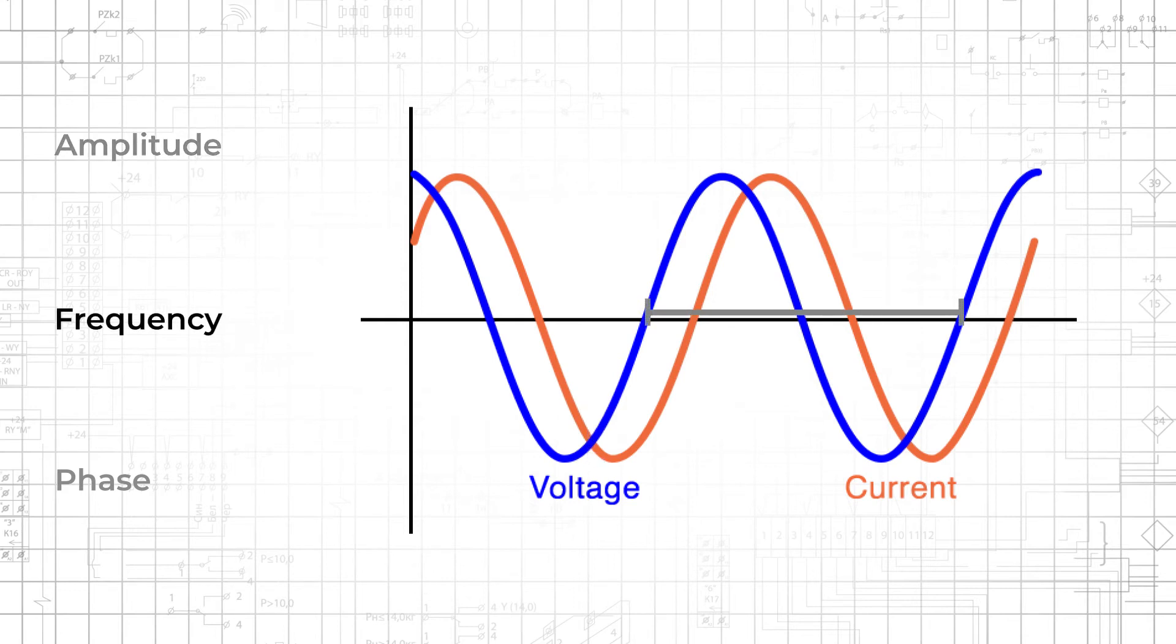Frequency tells us how quickly the sinusoid completes full cycles. This influences the signal's maximum transmission rate and determines how it is affected by capacitive and inductive components.